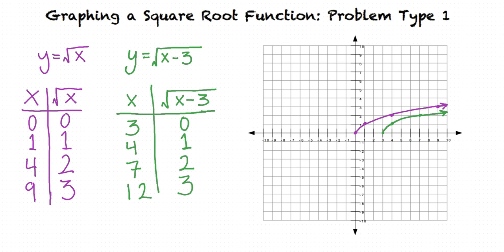In fact, for any value of x that we input into the equation y equals the square root of x, we must choose an x value that's 3 greater in order to obtain the same y value from the function y equals the square root of x minus 3. That's why everything is shifted 3 units to the right when we subtract 3 from x.